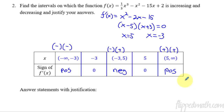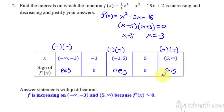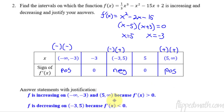Answers with justification: f is increasing from negative infinity to negative 3 and from 5 to infinity because the first derivative, f prime, is positive. And f is decreasing from negative 3 to 5 because f prime of x is less than 0. These justification statements are really important to get used to writing down.